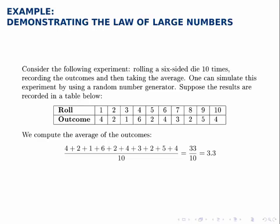Here, though, we'll illustrate this law. So consider this experiment. Let's roll a six-sided die over and over and over again and take the average of the results that we get.